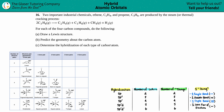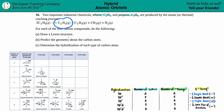Number 16: two important industrial chemicals, ethene (C₂H₄) and propene (C₃H₆), are produced by the steam or thermal cracking process. The balanced equation shows two C₃H₈ gas molecules producing C₂H₄ gas, C₃H₆ gas, methane (CH₄), and H₂ gas. For each of the four carbon compounds, we need to draw the Lewis structure.